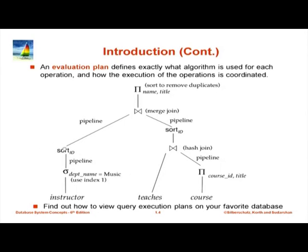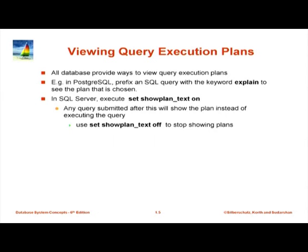We use index 1 — that is the name of the index — to find instructors in the music department, and we pipeline those results to the run generation part of sort. The run generation completes, and only then passes tuples to the merge phase of sort. The merge phase output is pipelined straight to the merge join. Similarly, the other merge phase output is pipelined to the same merge join. This project in turn does a sort to remove duplicates. The sorting was on id, which is not useful for name ordering, so we will need one more sort. That is the complete query evaluation plan.